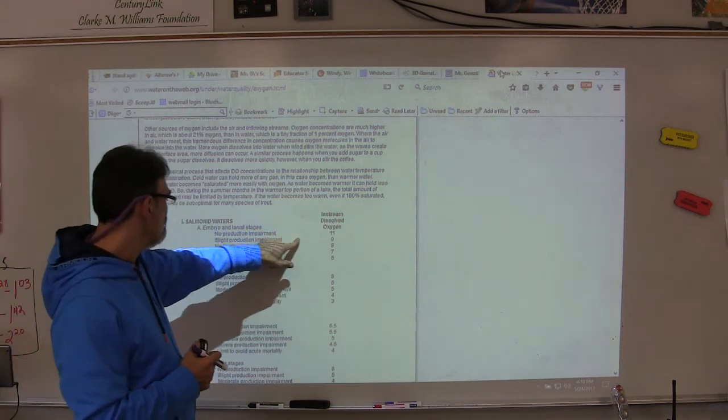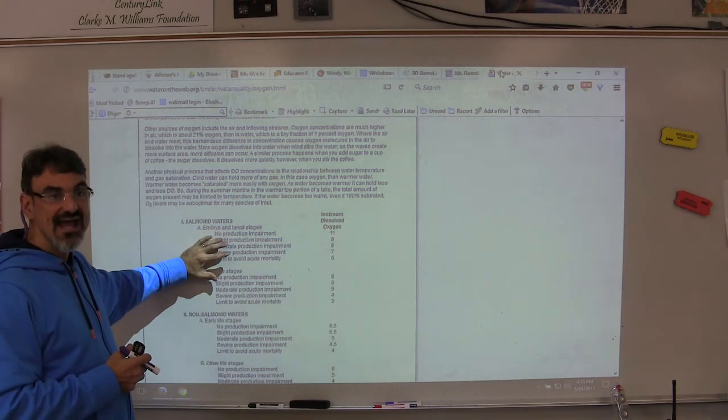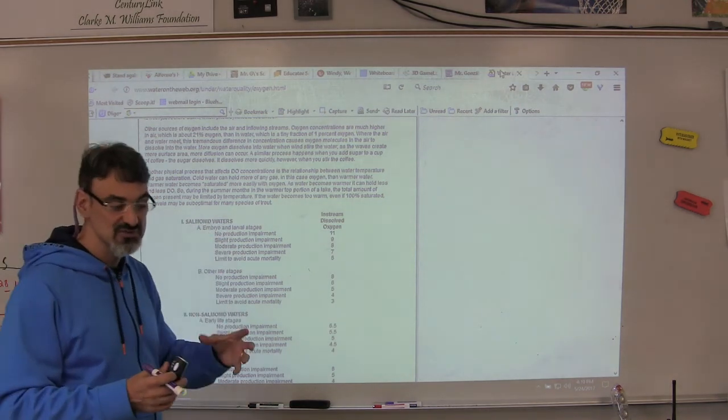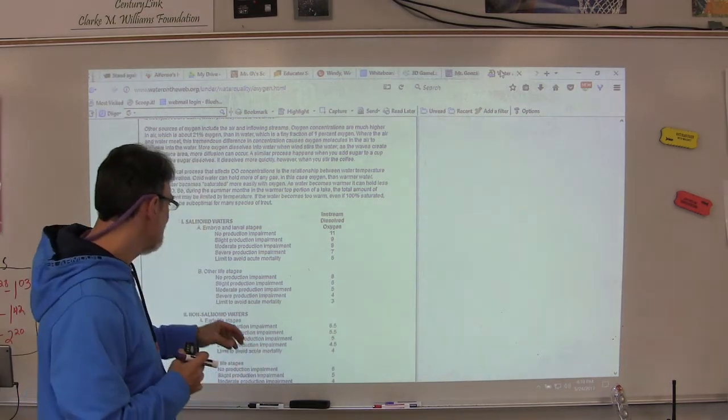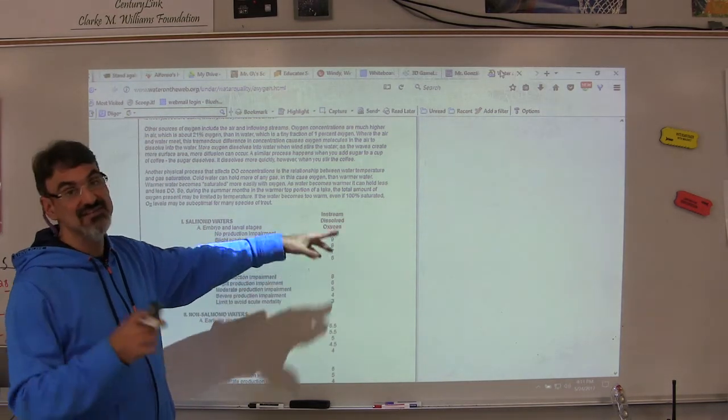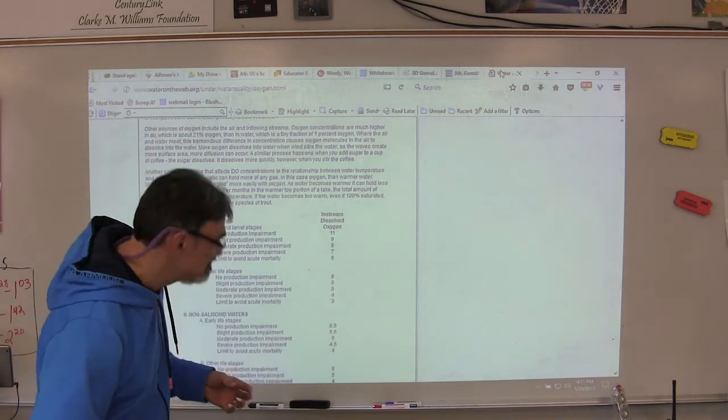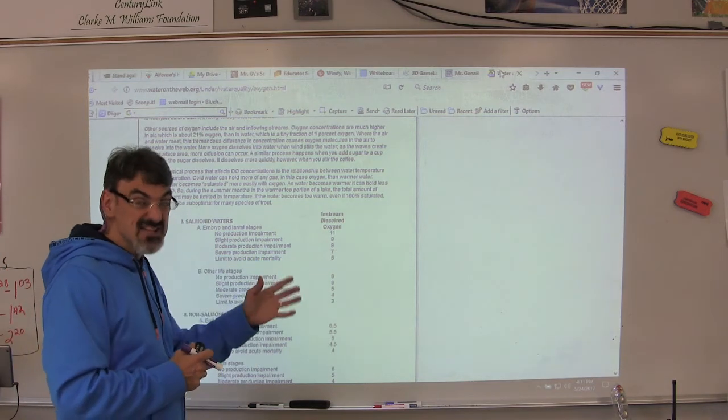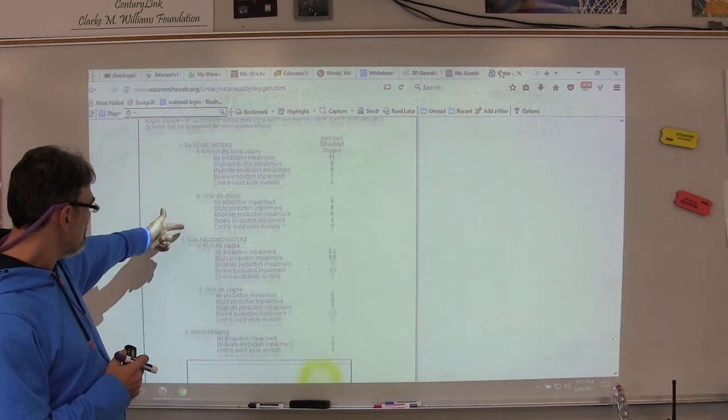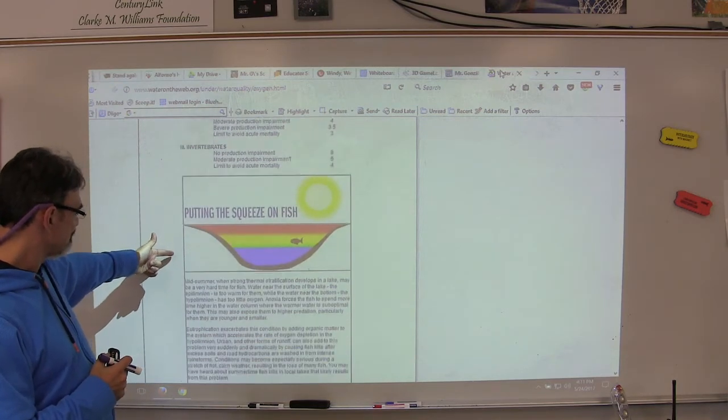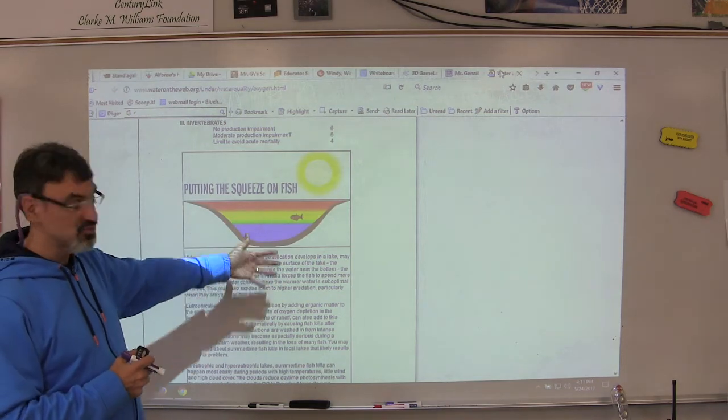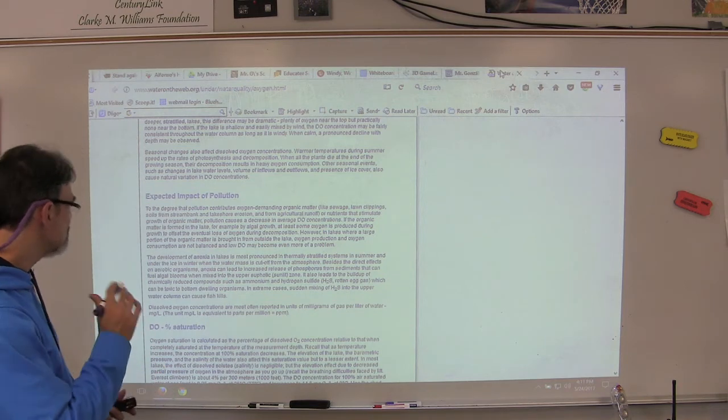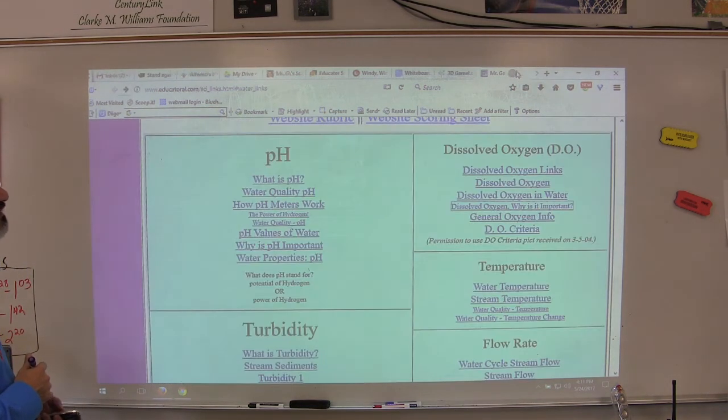And this tells you in-stream dissolved oxygen for four different actions that the salmon need to do, like production of their embryo and larval stages when they lay their eggs. No production impairment at 11 milligrams per liter. Well yeah, that makes sense, that's a lot of dissolved oxygen. But severe impairment at seven. That's not that low. Other life stages, non-salmonids. And this tells you about the summer problems that our fish face and the expected impact of pollution. So there's good stuff here that I'll let you read.